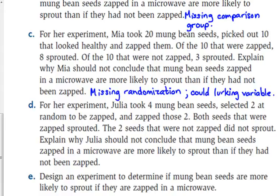Julia took four mung bean seeds, selected two at random to be zapped, and zapped those two. Both seeds that were zapped sprouted; the two that were not zapped did not sprout. She has randomization, which the others lacked, but what's wrong here? She only did four seeds — she's comparing two and two. She is lacking a sufficient number of subjects.